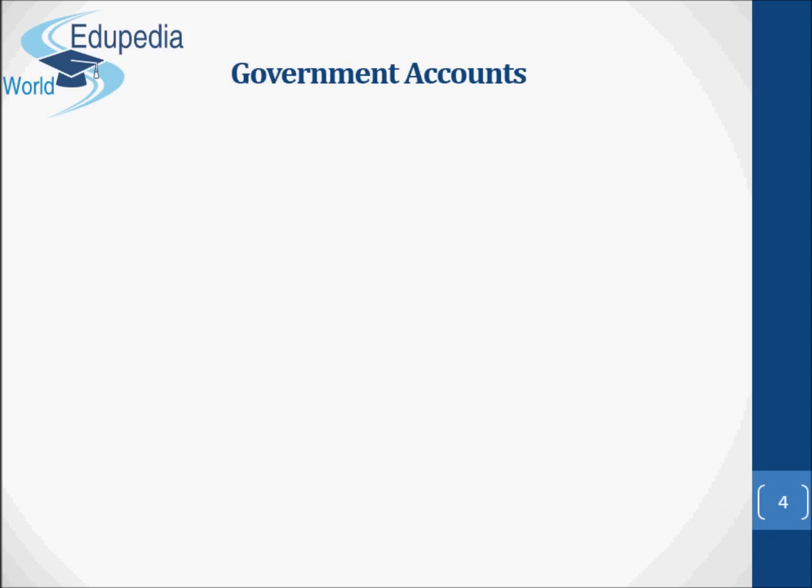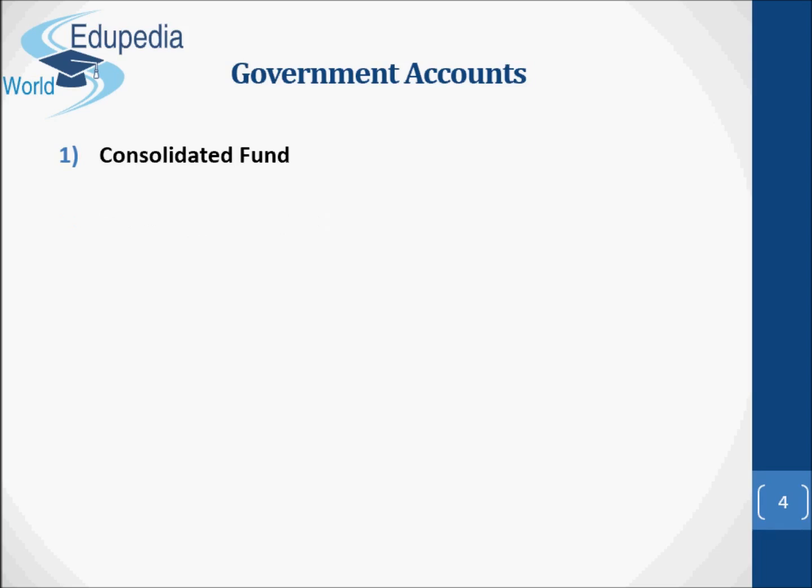Now let's discover the government accounts. We have the Consolidated Fund: all sums of money, all revenues of the government, the loans raised by it, and receipts by way of repayment of loans constitute the Consolidated Fund. All expenditures are also incurred out of this fund.